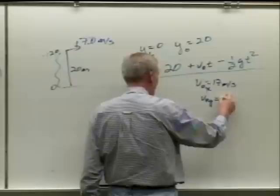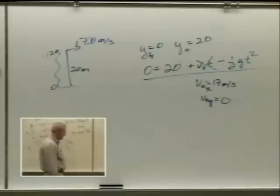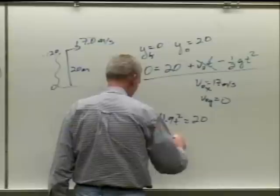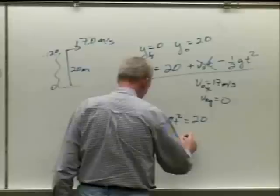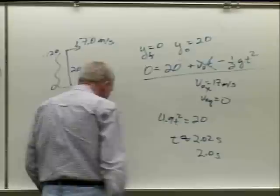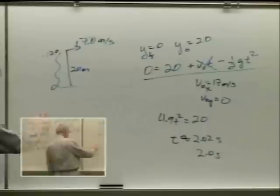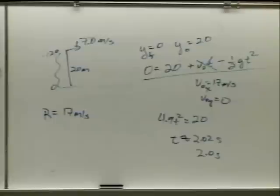So it's a much easier problem: 4.9 t squared equals 20, and t comes out to about 2.02 seconds — I accepted 2 seconds. The range is just 17 meters per second times 2, since horizontal velocity never changes — no acceleration in x — giving 34 meters.